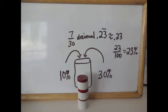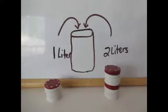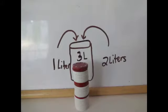Now notice this is in between 10 and 30, and it's closer to 30 because we added 2 liters of the 30 percent solution. Now let's look at the quantity. We had 1 liter here and 2 liters here. When we combine them, we have a total of 3 liters.